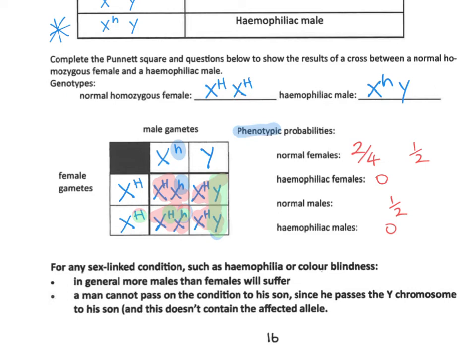About six of my relatives are colour blind — five are male and one is female. It's very rare to get a colour blind female because she needs two copies of the recessive allele. The same is true for haemophilia: very few females are haemophiliac because they need two copies of the recessive allele, whereas a male only needs one.